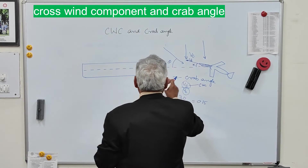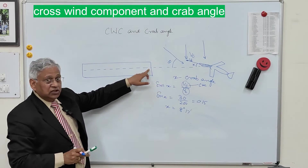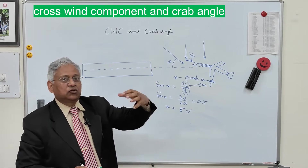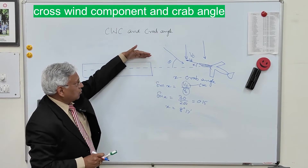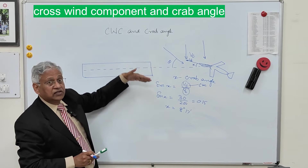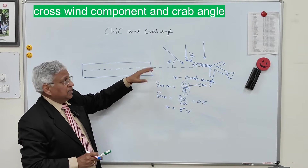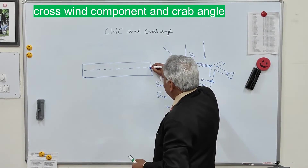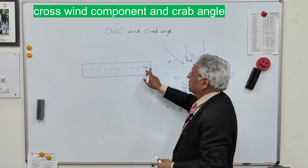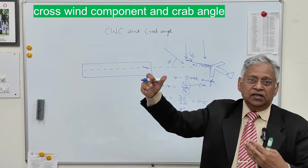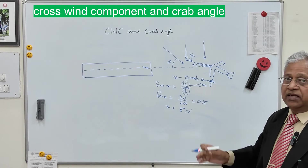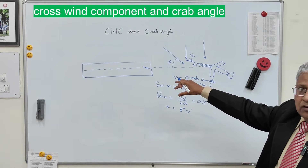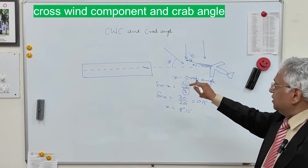The pilots should reduce this crab angle to zero just before landing. If it is reduced too early, the crosswind component can blow the aircraft off the pavement. If it is not reduced just before touchdown, the aircraft will land in the wrong direction and may go out of the runway. So the crab angle should be reduced slowly to zero just before landing.